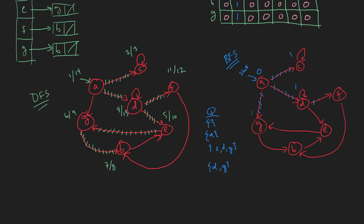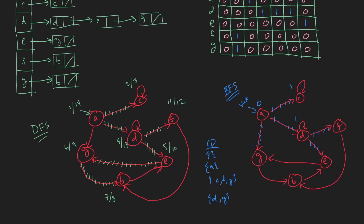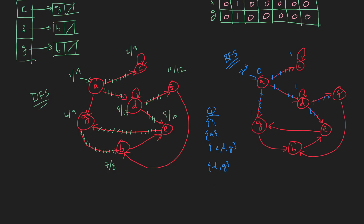Next, we take D off and put E and F on. E comes first in the adjacency list, so we put E on first. So we've got G, E, and F — these are all at a distance of two. Next, we take G off and put B on. So now our Q looks like E, F, B. Next in the Q is E — we take E off. G has already been discovered, so we don't put anything else on.